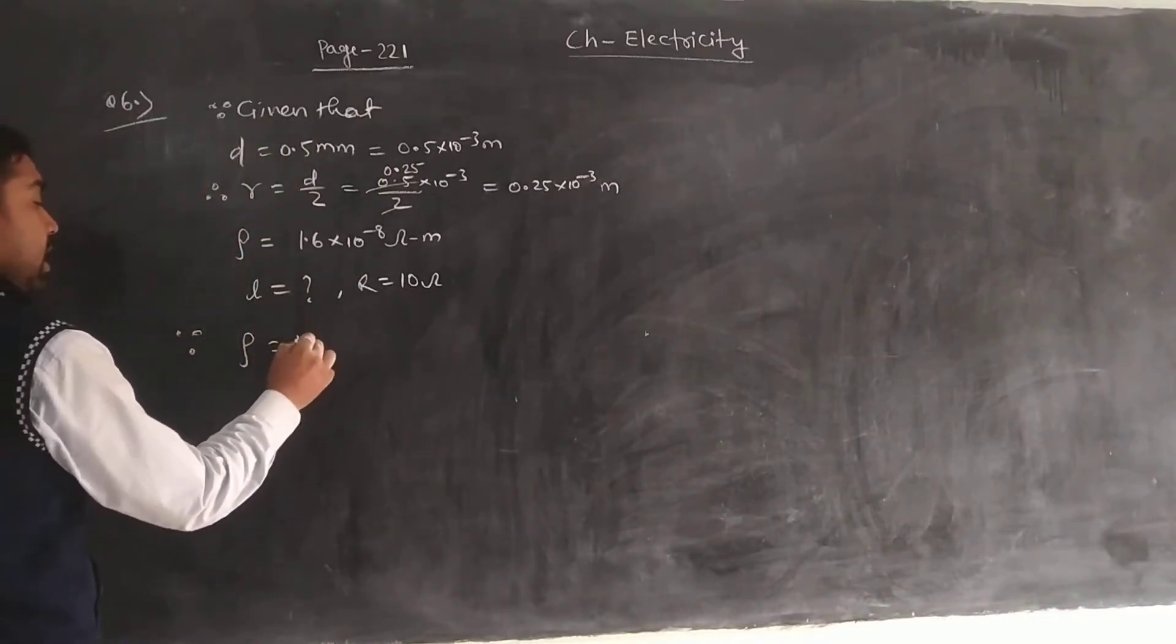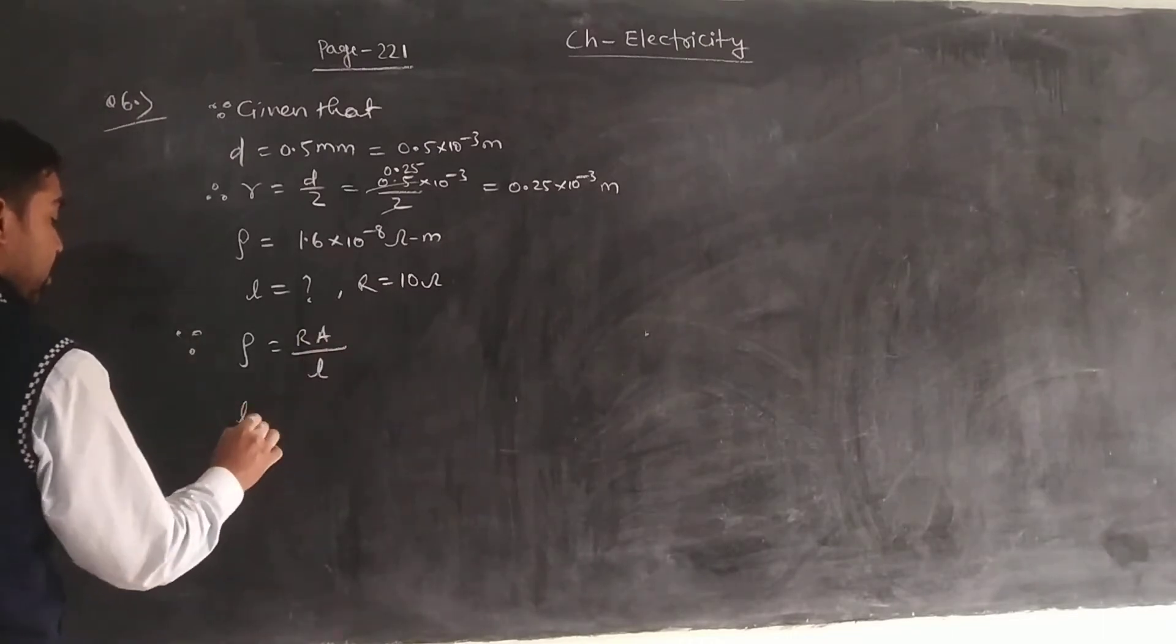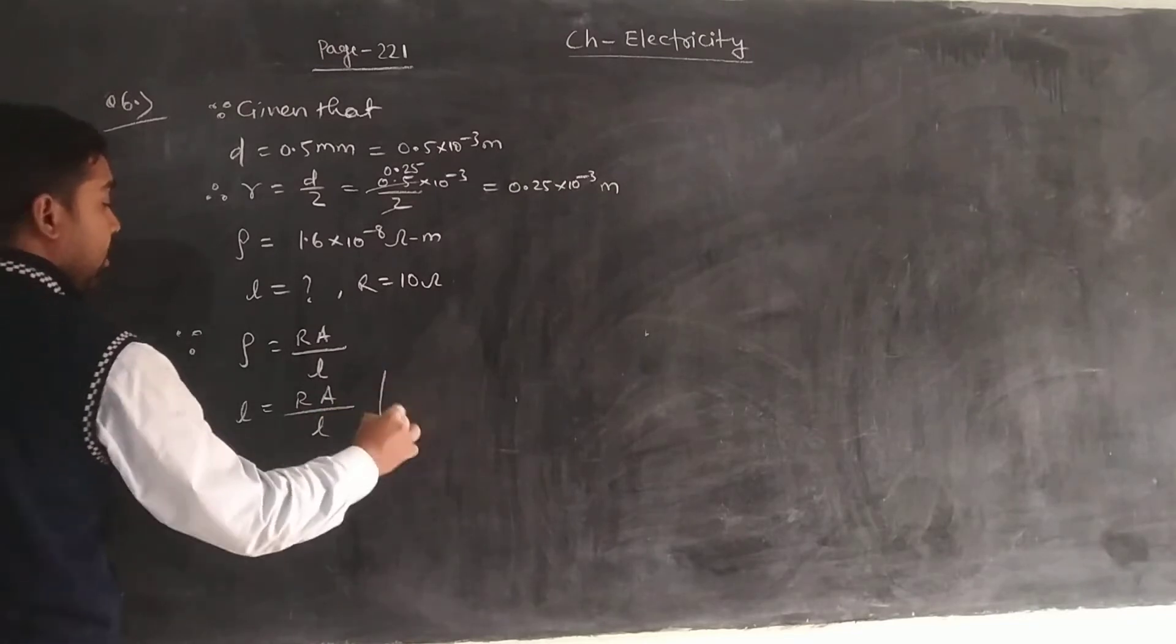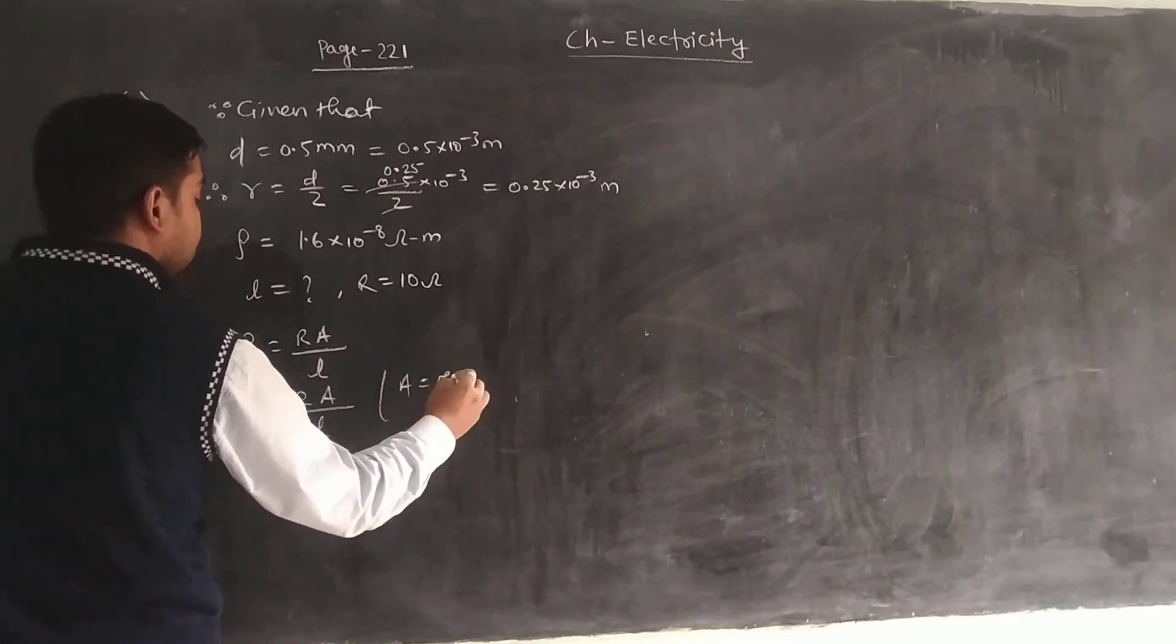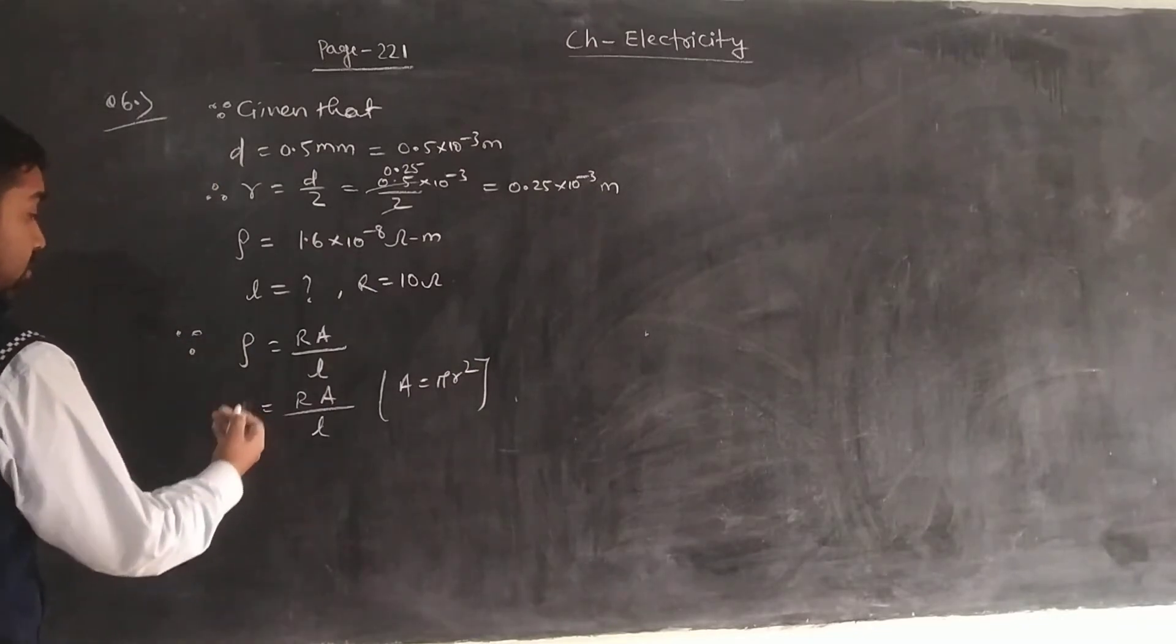Resistivity is equal to R A by L, so L equal to R A by resistivity. The area of cross section of wire is pi R square.